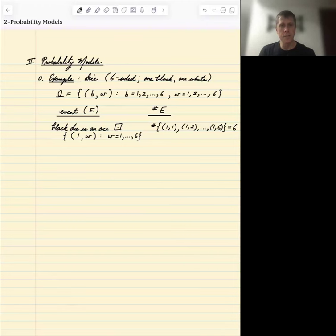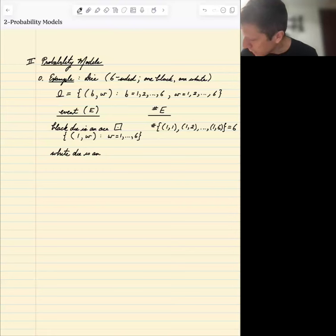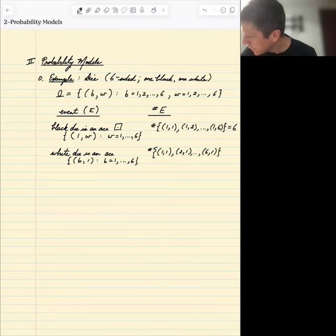Now this number turns out to be the same as the event that the white die is an ace by symmetry because this is the event B1, where now B takes on the values. These are different events. These are different events, but they have the same number of outcomes.